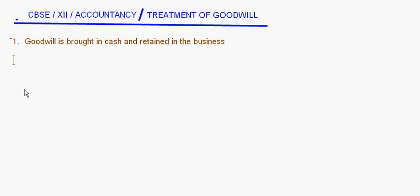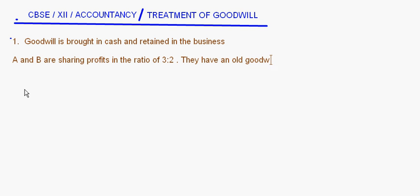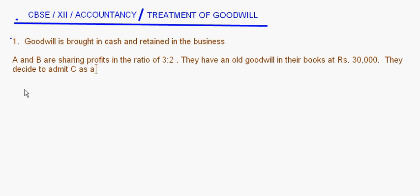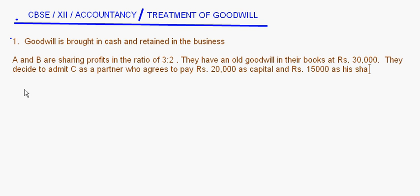I'll take a small example for this. A and B are sharing profits in the ratio of 3 is to 2. They have an old goodwill in their books at rupees 30,000. Now they decide to admit C as a partner who agrees to pay rupees 20,000 as capital and rupees 15,000 as his share of goodwill.